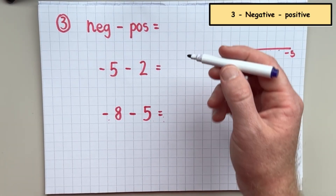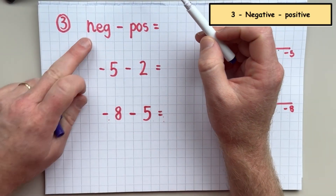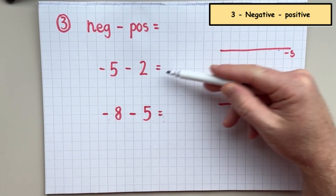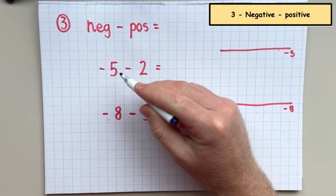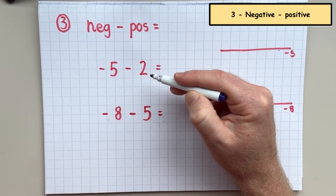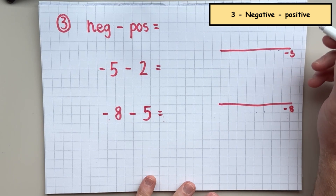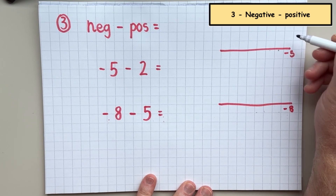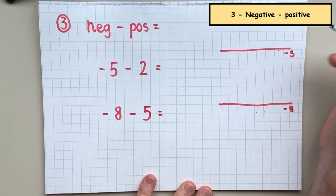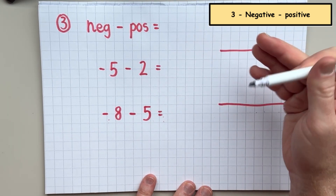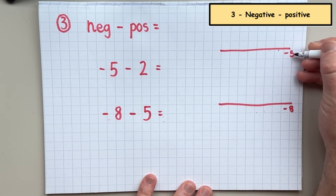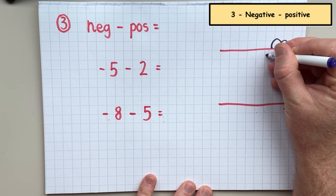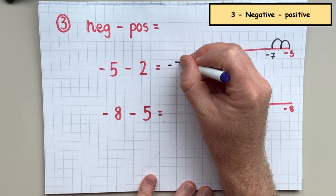In the third section of this video we're going to investigate what happens when you have a negative number and you take away a positive number. The first example is negative five take away positive two. When we're taking away a positive number from a negative number, we're going to go left on the number line, so our number is going to decrease. We have negative five and we take away two: negative six, negative seven. So the answer is negative seven.